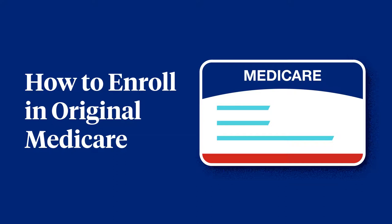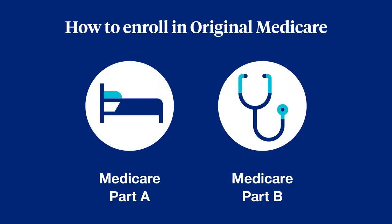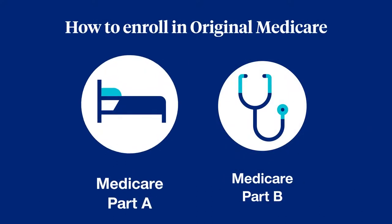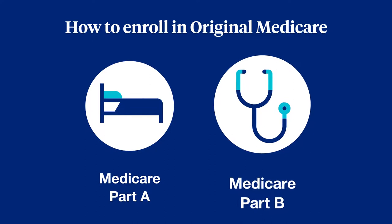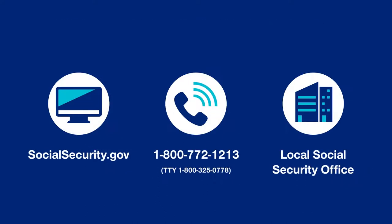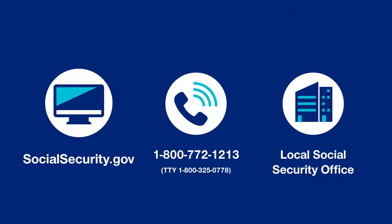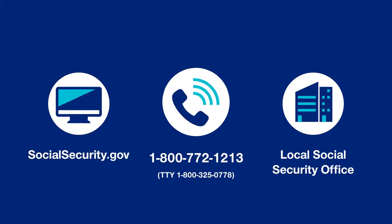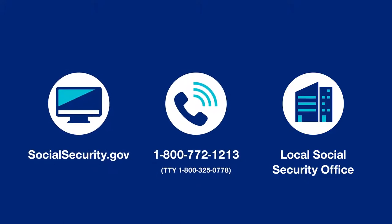How to enroll in Medicare. Enrolling in Medicare Part A and Part B is done with the Social Security Administration. You can sign up in three different ways: online, by phone, or in person at your local Social Security office.